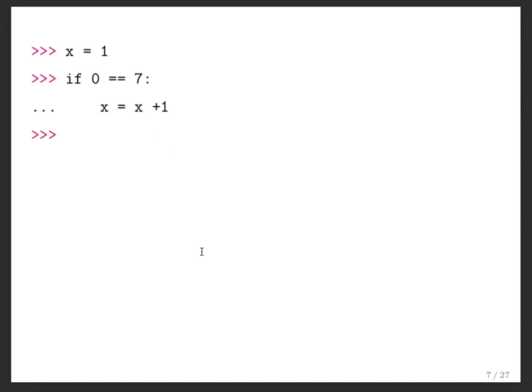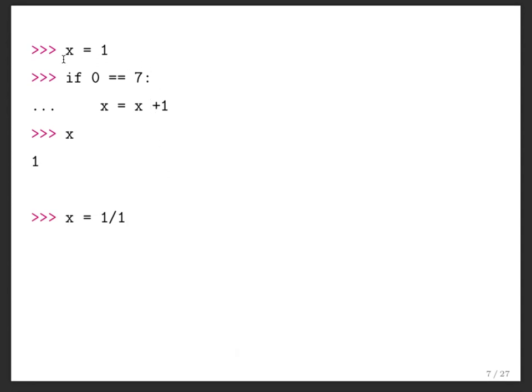Here's our first example of an if statement. If x is set to 1, and then I have an if statement that says if 0 is equal to 7, then increment x by 1. What is the value of x? 1, right? Because x is 1, this condition is false, and because this is false, this if statement gets skipped — the code is literally skipped.